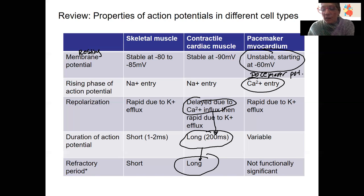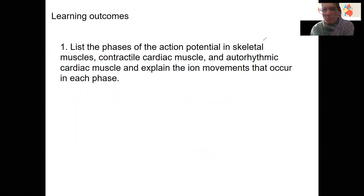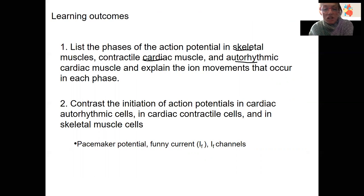So the learning outcomes we've covered in these past few videos — a couple here, and some of them are a little redundant. This one is contrasting the phases, listing the phases in these three types of muscle, and explaining the ion movements in each. We've also got contrasting the initiation of the action potentials in these three different types of cells — primarily, the one that stands out as different is the pacemaker cells.